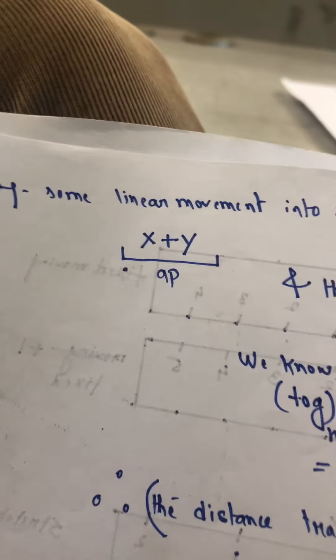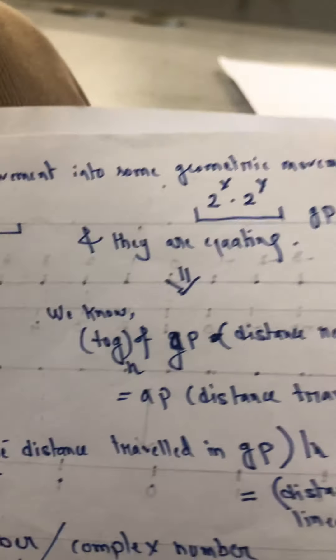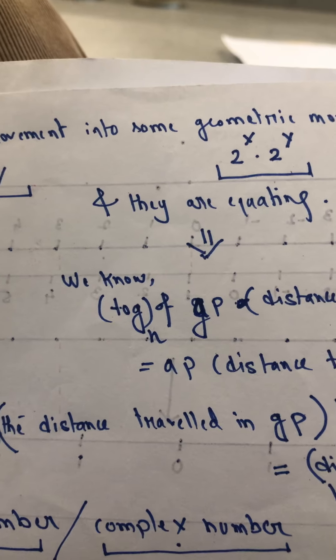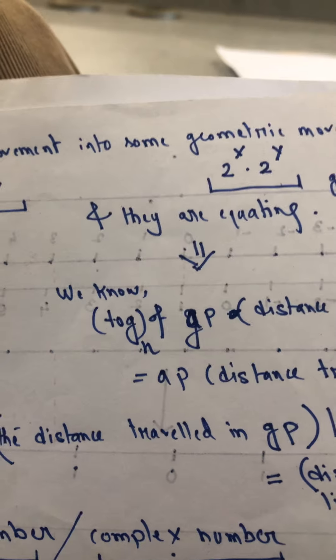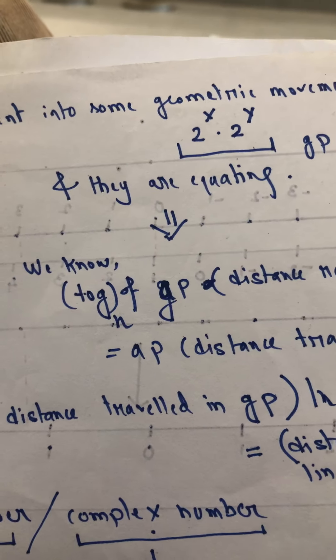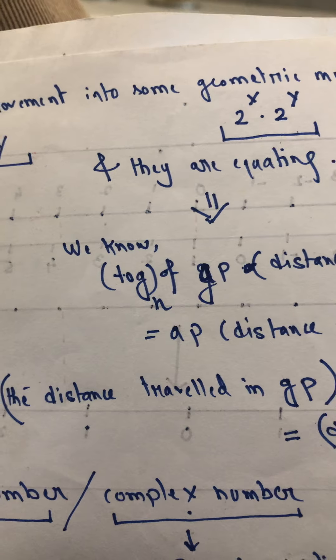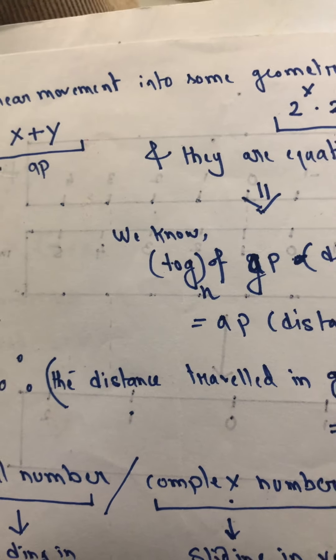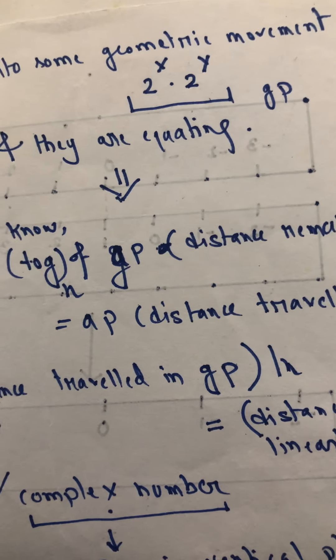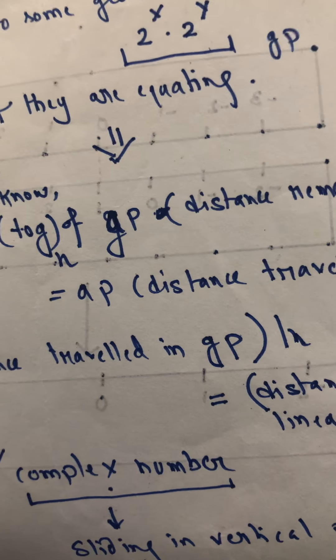So what I am trying to tell you is there is some sort of a relationship between AP and GP, as we know, and that relationship is in the form of log. We are considering a case of exponents: 2 to the power x into 2 to the power y, which turns out to be 2 to the power x plus y. So x plus y is arithmetic progression — normal addition — and 2^x into 2^y is multiplication. So I am putting in addition as a sliding action, and that sliding action is giving me a stretching action, meaning a multiplication. And because of this stretching action, we are also getting some sort of rotation, and these are related in terms of log.